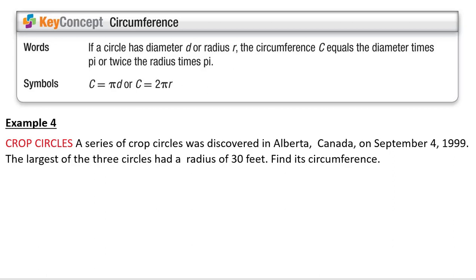Circumference. We actually did this formula back in chapter 1. The circumference equals the diameter times pi, or twice the radius times pi.